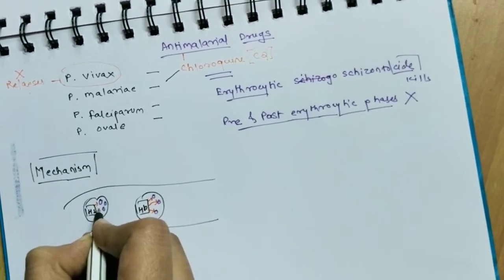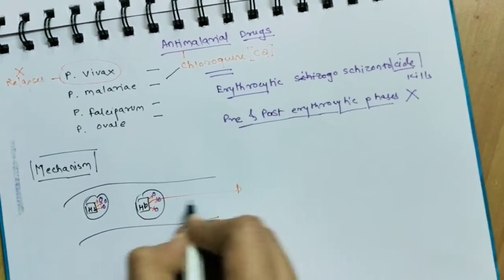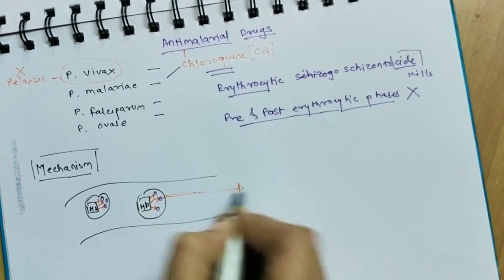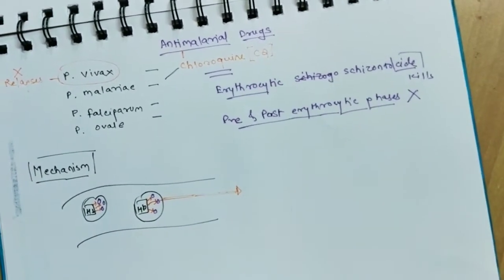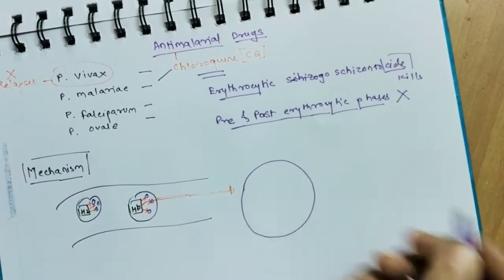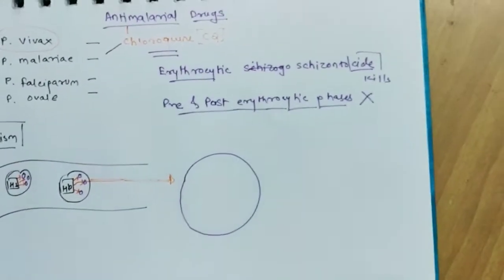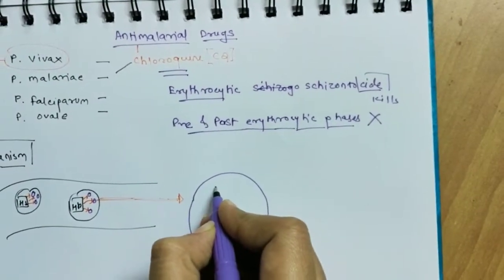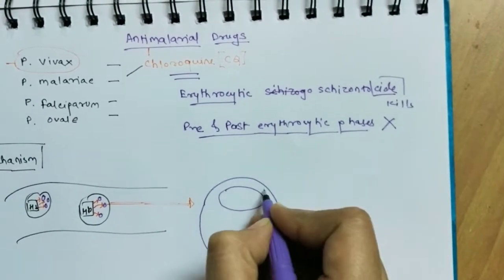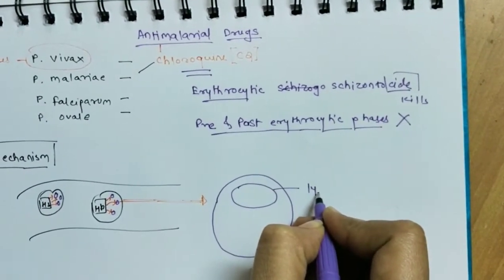And it takes up the hemoglobin in it. Now hemoglobin is needed for various metabolic reactions for the plasmodium - it might need it. Now let me draw a big size of the plasmodium for you, which you can see.